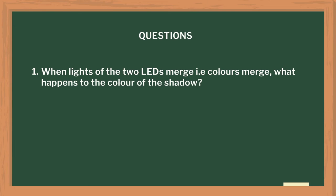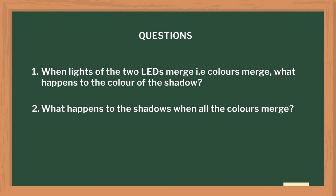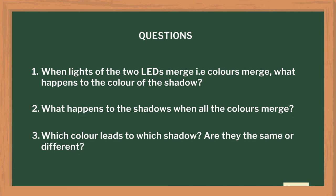While performing this activity, I asked them a lot of questions such as: when lights of two LEDs merge — that is, colors merge — what happens to the color of the shadow? What happens to the shadows when all the colors merge? Which color leads to which shadow? Are they the same or different? With such questions, you can facilitate a discussion on different combinations of primary colors.